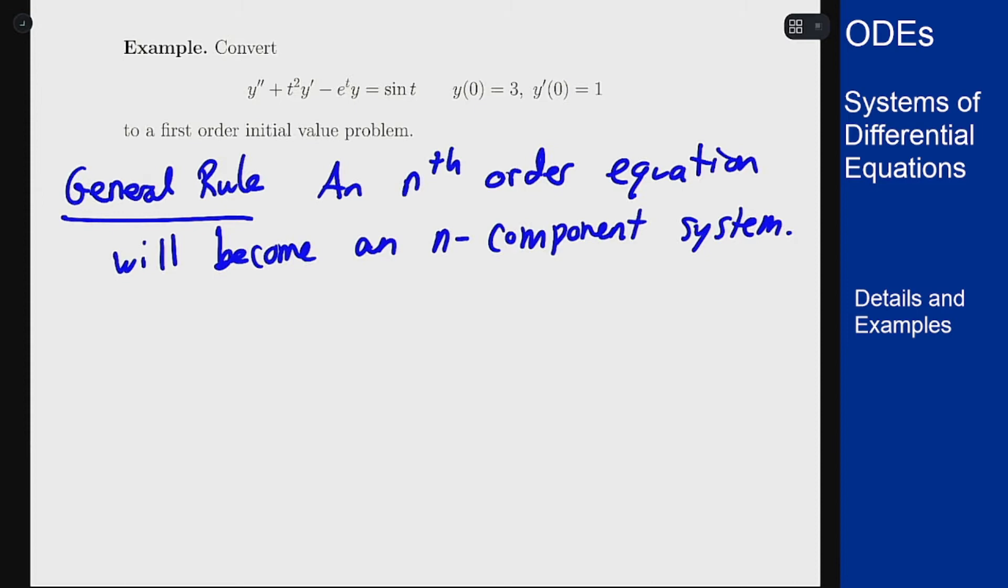For first-order equations, we already are first-order. We don't need to add more components to make it a first-order object. For an nth-order equation, we're going to need n components. And how do we pick these?